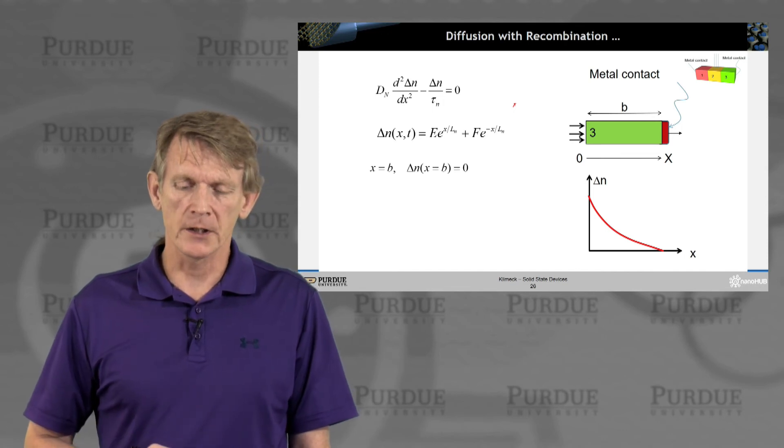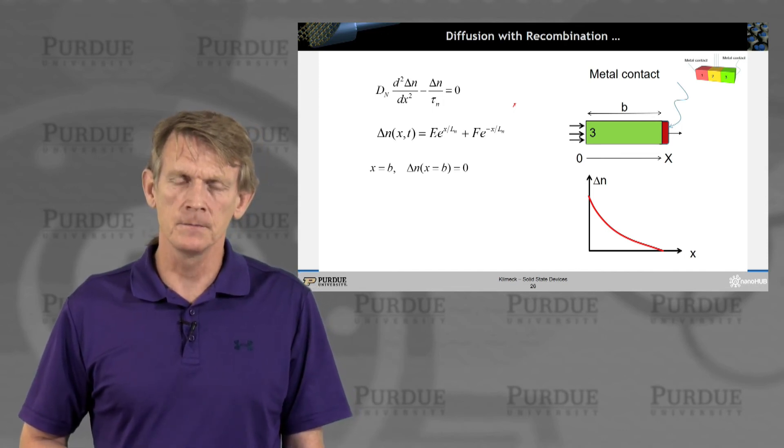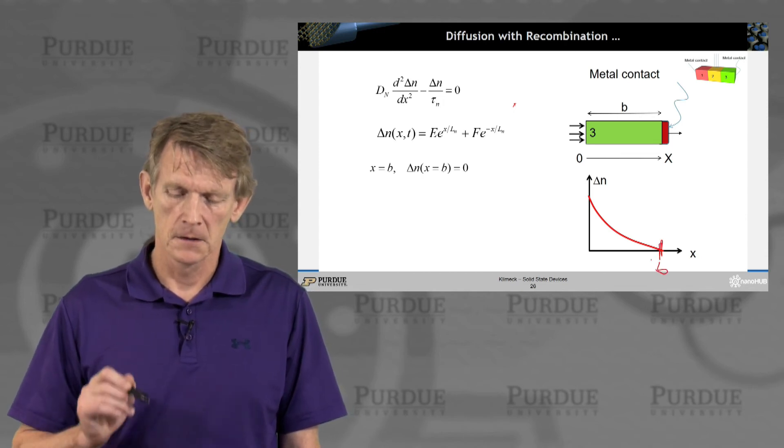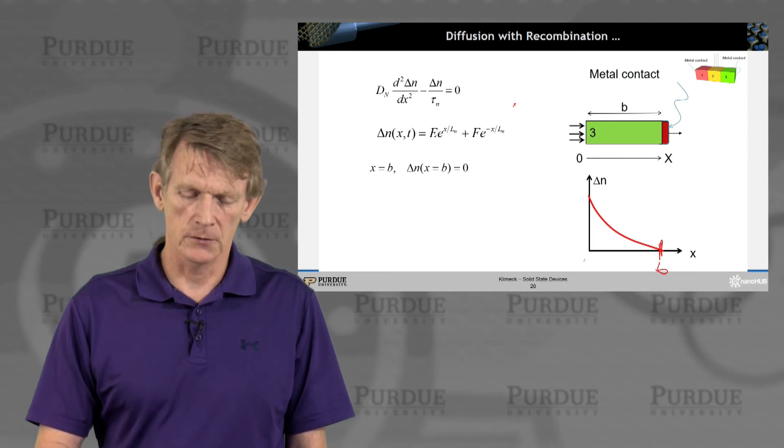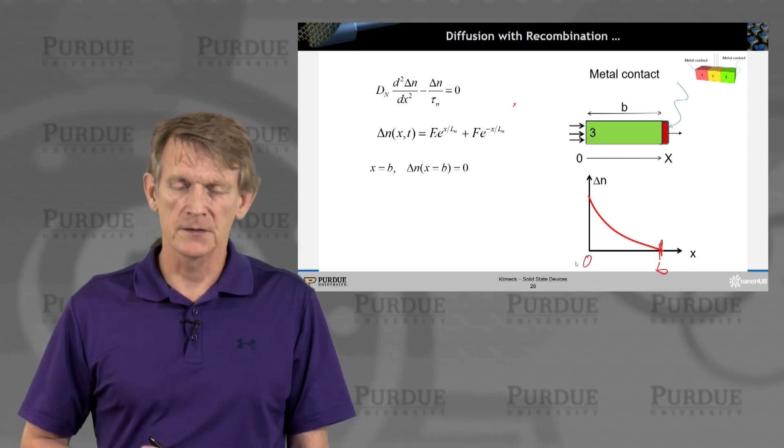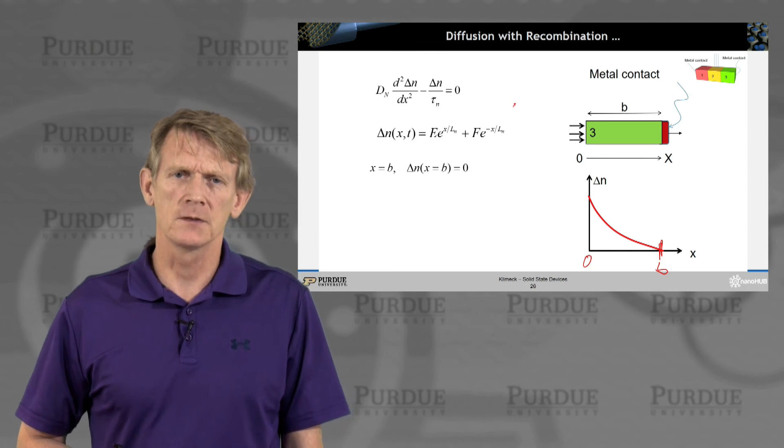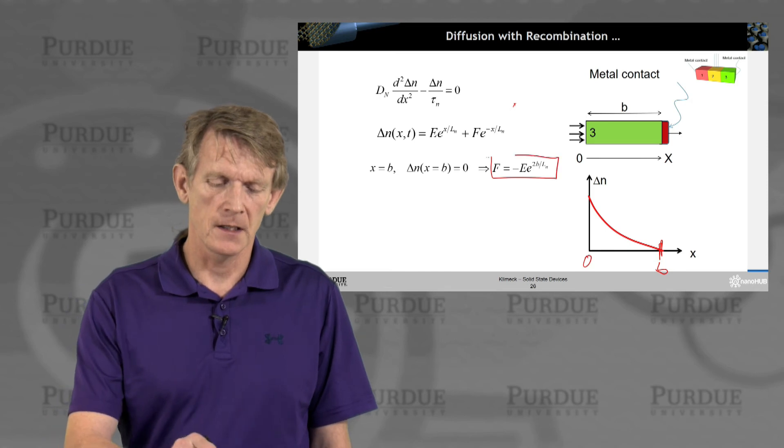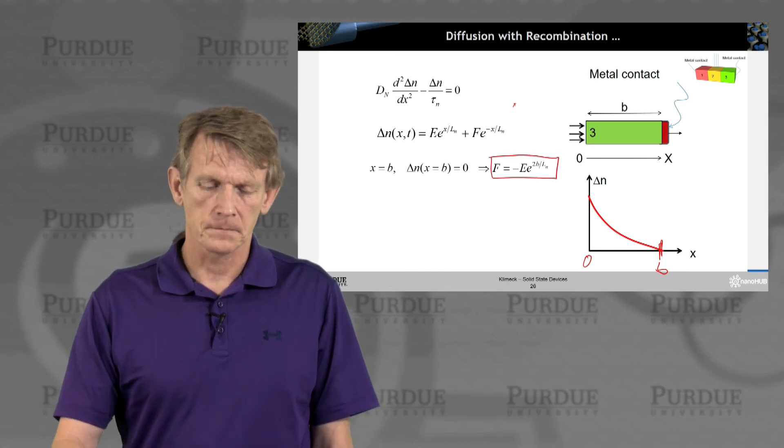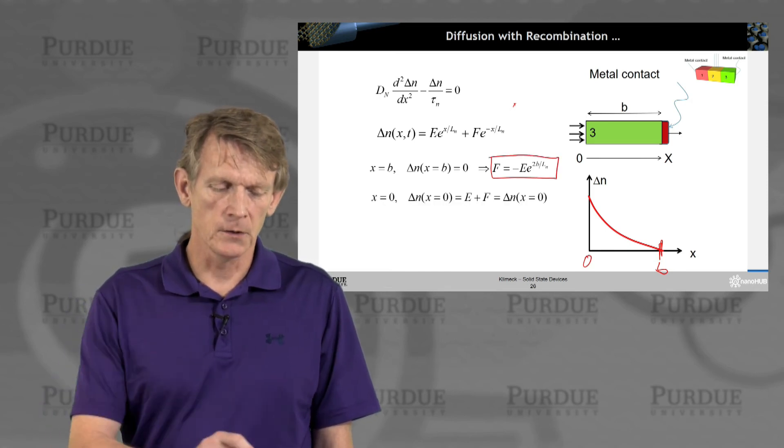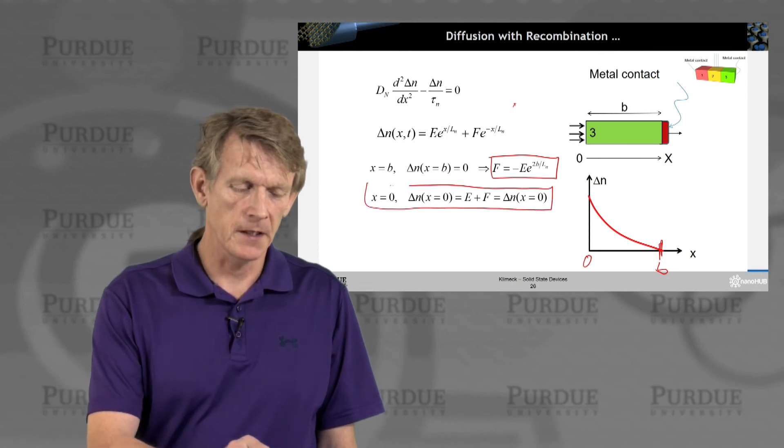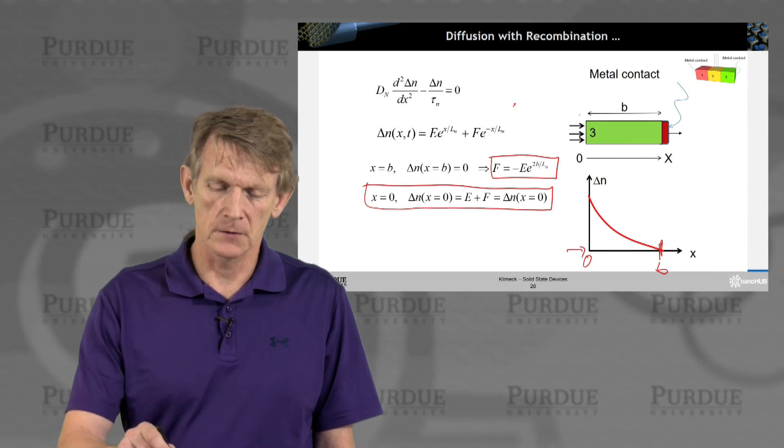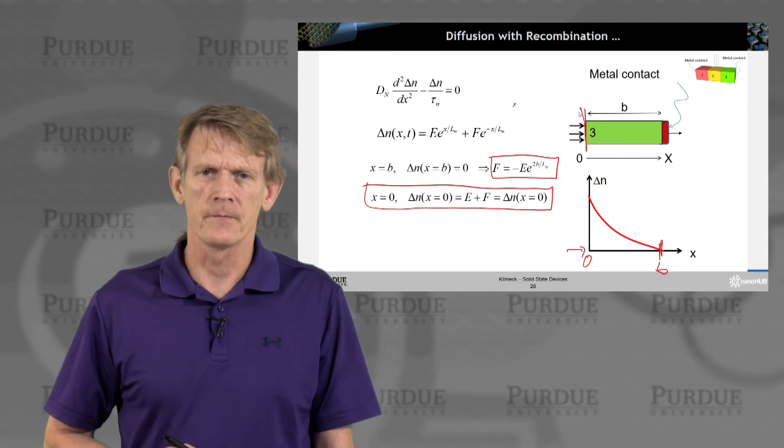All right. Again, we have now boundary conditions. We are assuming a metal contact in the system. So at some length b, where the coordinate system runs now from zero to x here, we set the minority carrier concentration to zero. And that gives us a relationship between the coefficient f and e. And at x equals zero, we need to balance the number of carriers against the injection that is coming from this side here. So this is our boundary condition here.